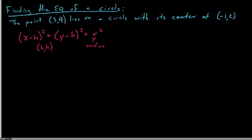Let's take a look at this example. What if the point (3,4) were to lie on a circle and it had a center at (-1,2)?